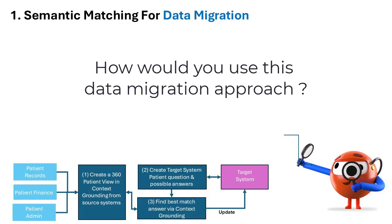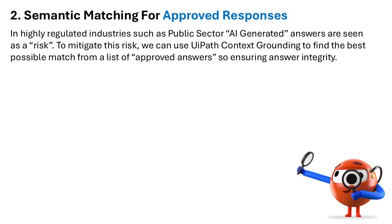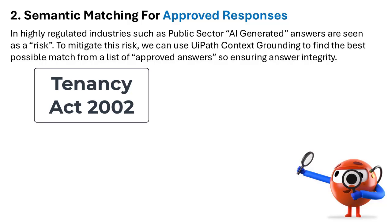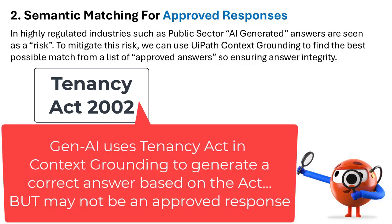So how would you use this data migration approach? In our second scenario, we're looking at approved responses. In highly regulated industries such as the public sector, AI-generated answers are seen as a risk. So to mitigate the risk, we're going to use context grounding to find the best possible match from only approved answers.